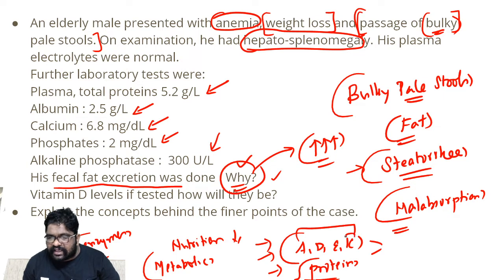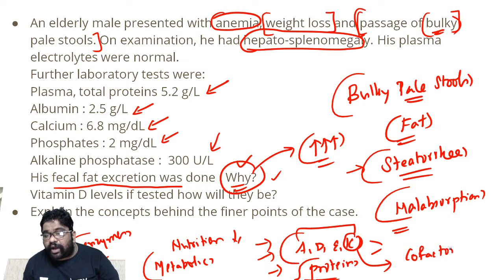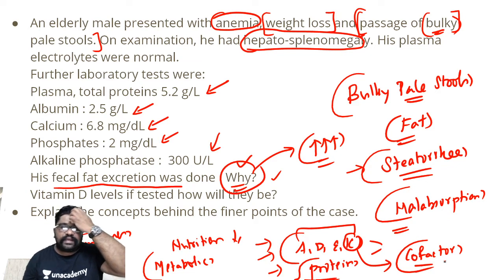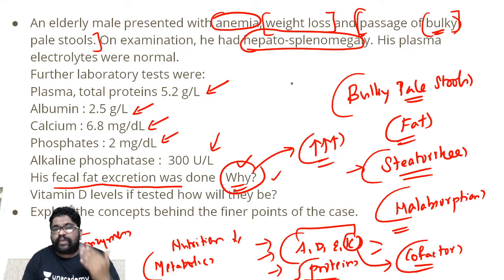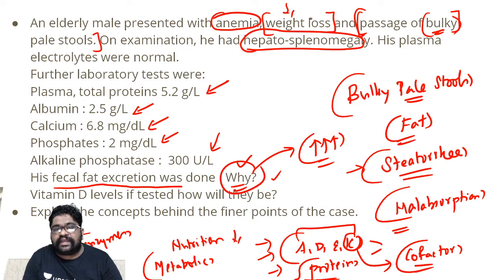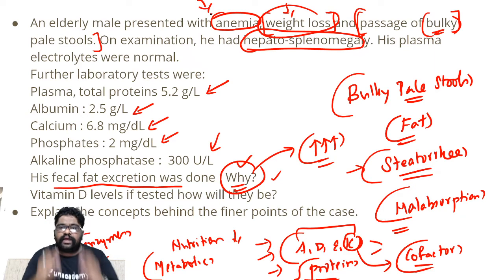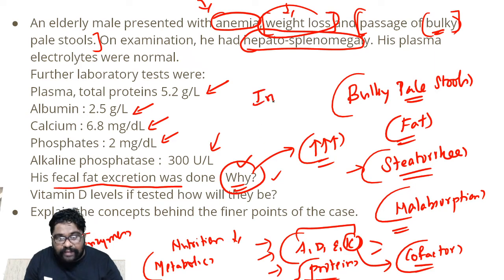Among A, D, E, and K, vitamin K is the only fat-soluble vitamin that can act as a co-factor for carboxylase enzymes, such as vitamin K epoxide reductase activity. Whenever the patient has decreased nutritional absorption, he can have weight loss. Anemia can easily be because of iron malabsorption.